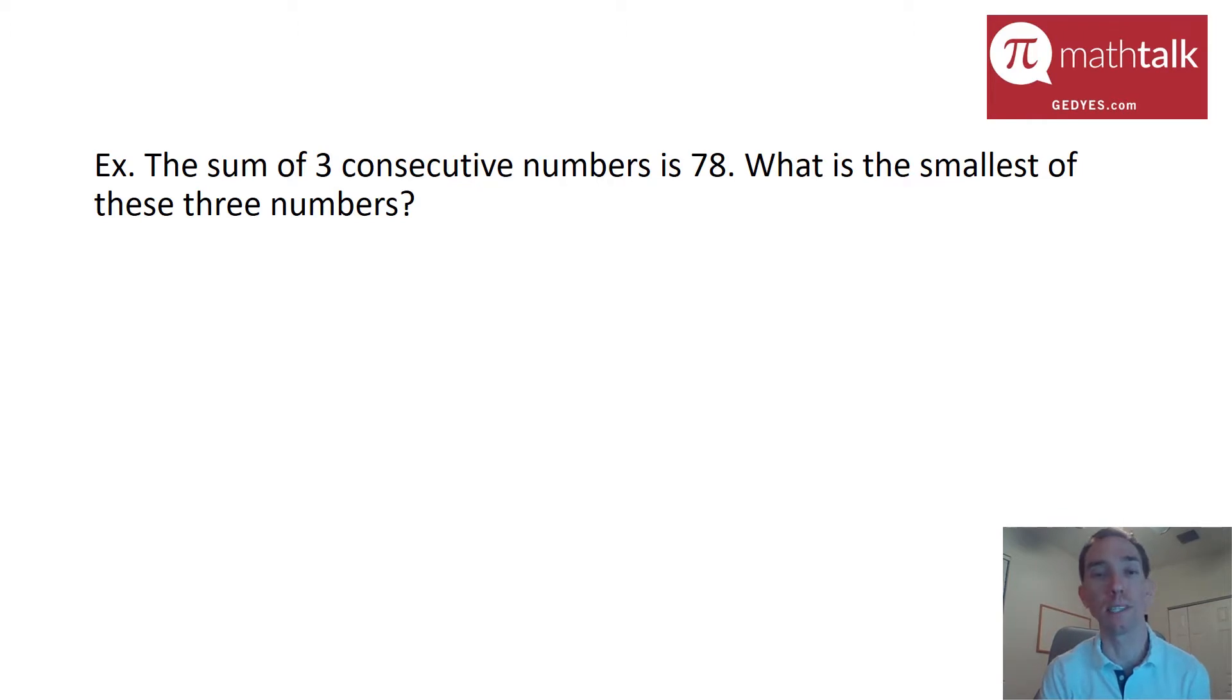So if we set up an equation, we start with some number, let's call it x. We have three consecutive numbers, which means the second number is one more than x, and the third number is two more than x. So we have x plus x plus 1 plus x plus 2 equals 78. This is great because we have an equation with different terms, but all the terms have the same variable, which means we can simplify. If I simplify it, I get 3x plus 3 equals 78.